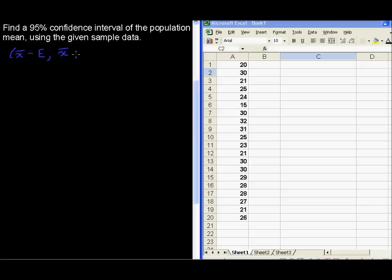And then x̄, the sample mean, plus the margin of error is the upper limit to the confidence interval. Now this margin of error can be found very quickly using Excel.